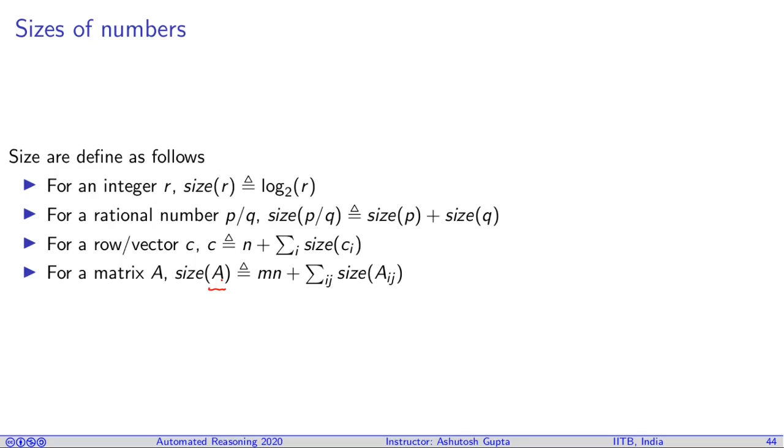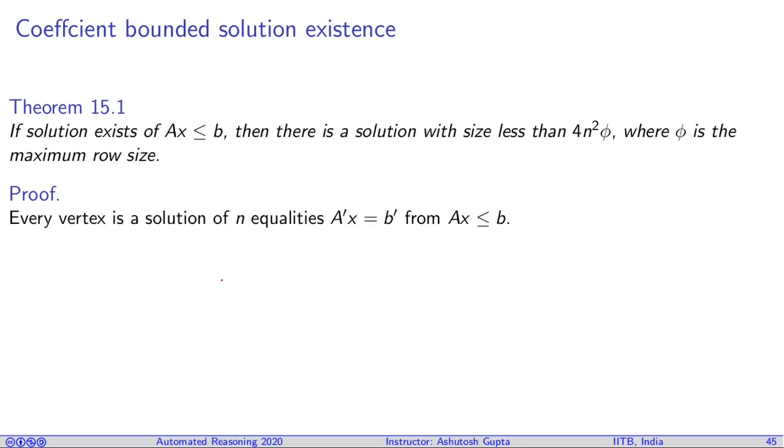Using this size parameter, we can actually estimate the size of the polyhedron, not only upper bound but also lower bound. If a solution of Ax ≤ b exists, then there is a solution with size less than or equal to 4n²φ, where φ is the maximum row size. How do we say that?